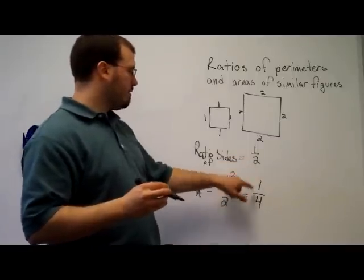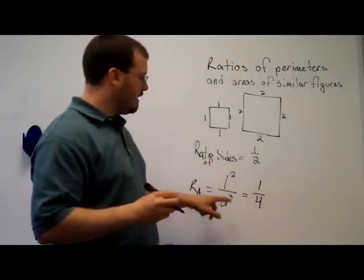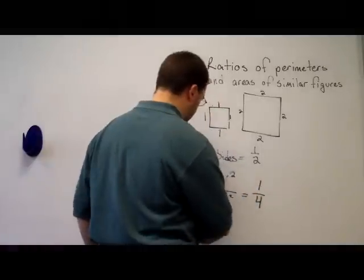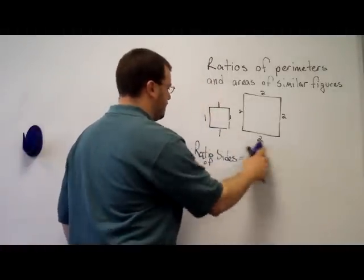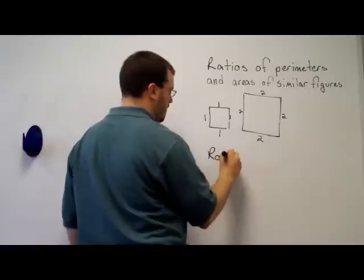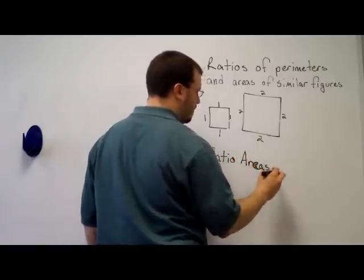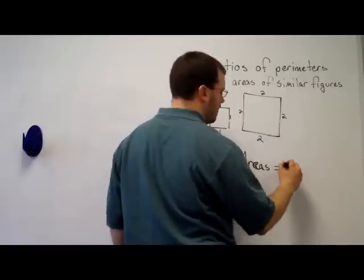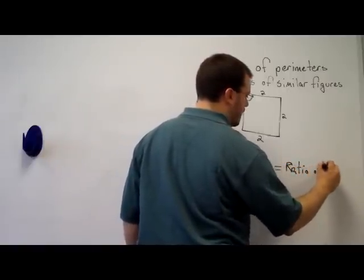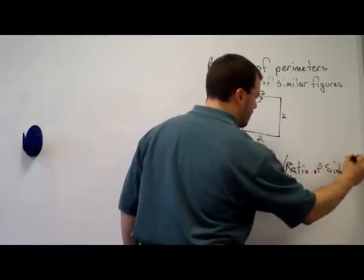In fact, 1 fourth is 1 half squared. The ratio of the areas is equal to the ratio of sides squared. The ratio of the areas of similar figures is equal to the ratio of the sides squared.